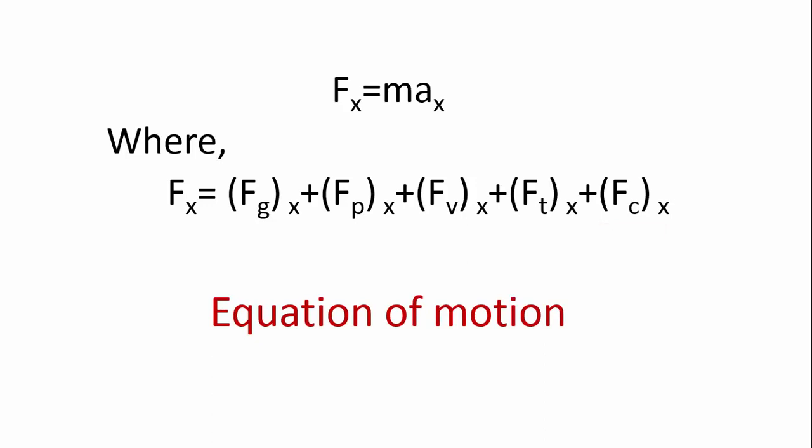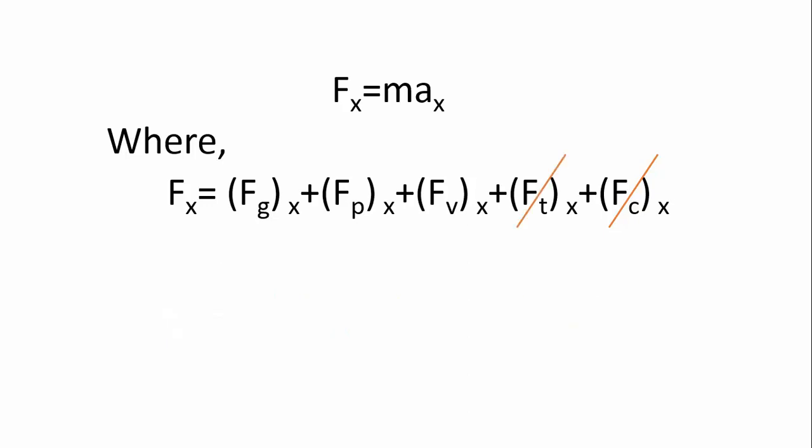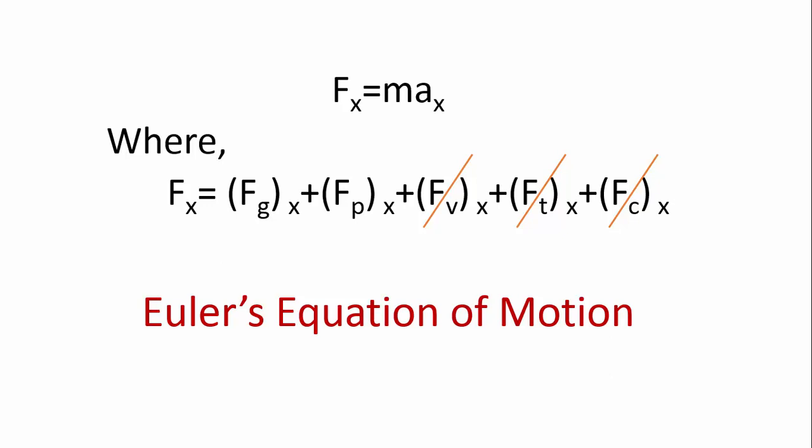If the force due to compressibility is negligible, the equation becomes Raoult's equation of motion. If the force due to turbulence is also neglected, it becomes Navier-Stokes equation. If you further want to simplify it and neglect the force due to viscosity, the equation becomes Euler's equation of motion.